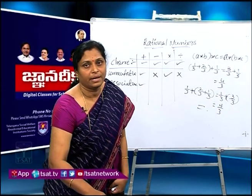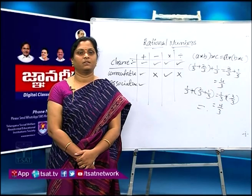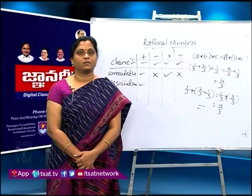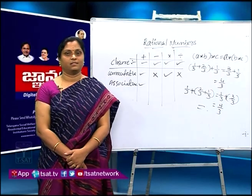Do some exercise. Note down this. The questions are: Represent the following rational numbers on the number line — 5/9, minus 2/3, 14/7. The second question is: Write the standard form of the following rational numbers — 148/256, 1000/20000, and 256/157. Do practice. I hope we will meet again. Thank you.